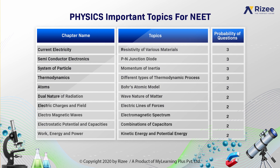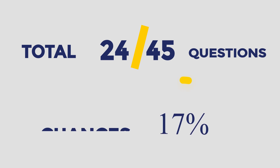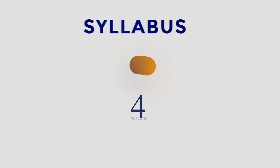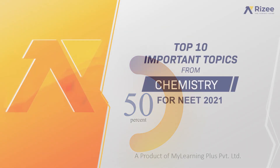Coming to work energy and power, kinetic energy and potential energy are the important topics. And the probability of questions are 2. So in total, 24 questions of 45 are being presented in physics — more than 50% chance of scoring, as 50% syllabus is covered from these 10 important topics.